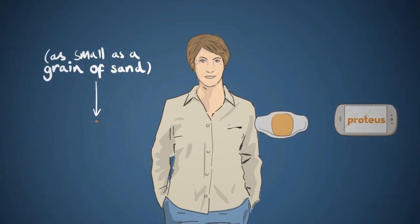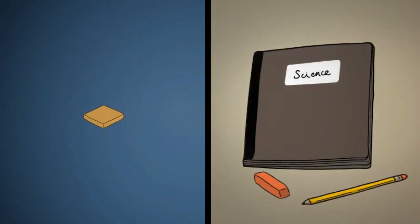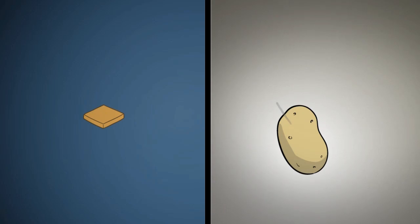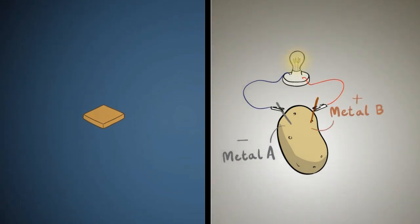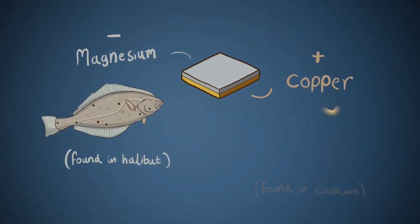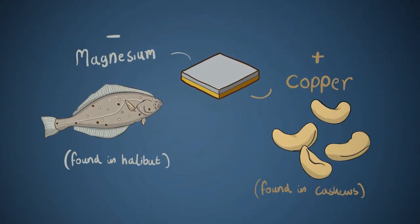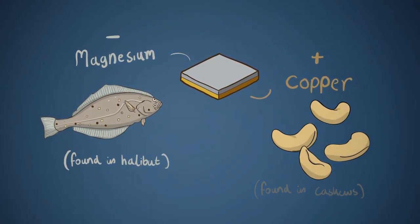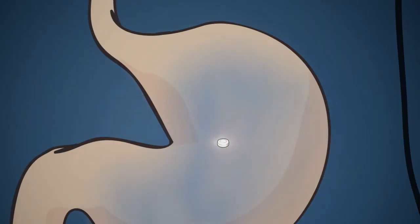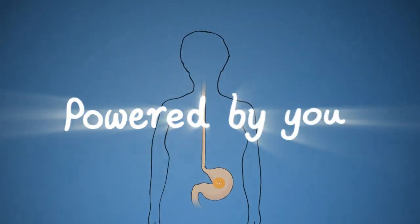Our system starts with a tiny sensor that goes in your medicine. Remember how a potato battery works? Two metals and a wet potato can power a light bulb. The sensor works the same way. Two metals generate power when they get wet in your stomach. So it's literally powered by you.